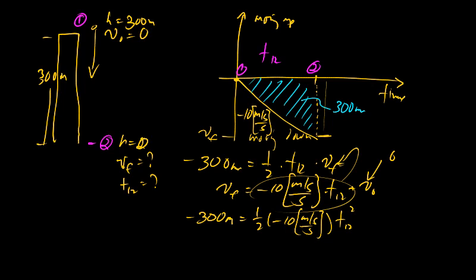So now we can multiply by 2, divide by 10, and then I end up with T1,2 squared is equal to 2 times the 300 meters divided by 10 meters per second every single second. Notice meters cancels with meters here, and I'm going to get 60 seconds squared in terms of my units.